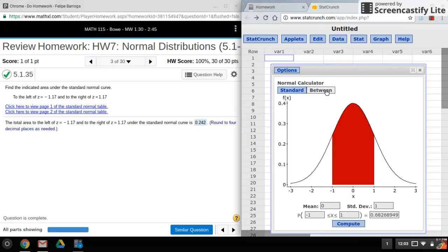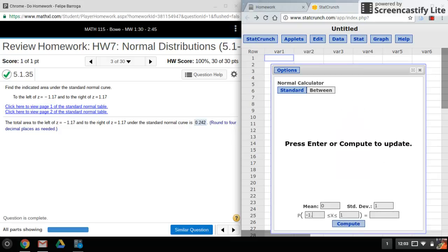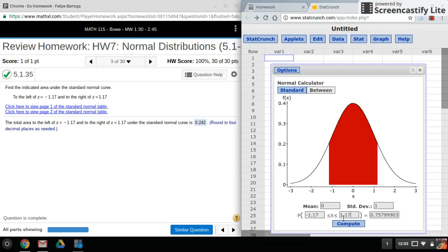Since we're still dealing with z-scores, we'll leave this at zero and this at one. We'll put the negative z-score here and the positive z-score here. If we compute, that's the area between these two values.